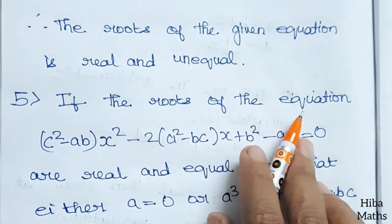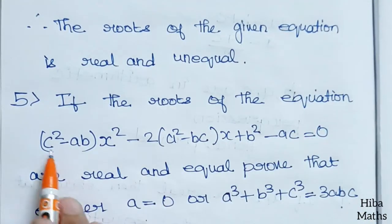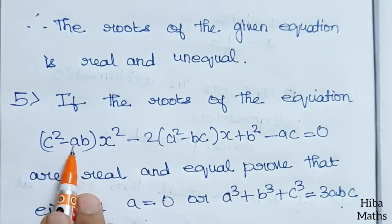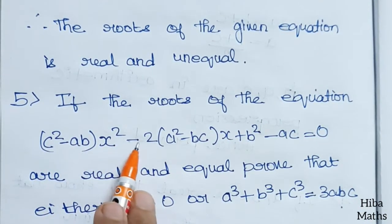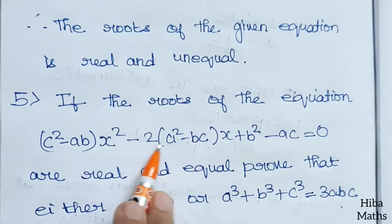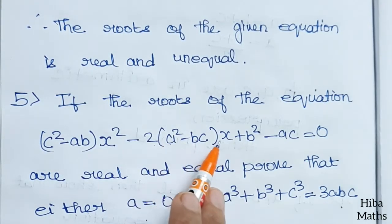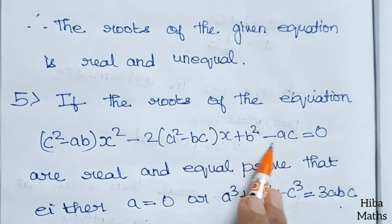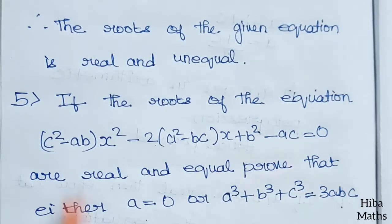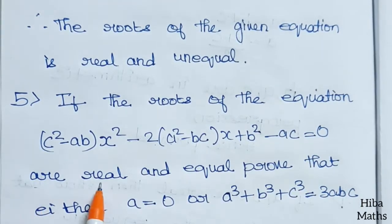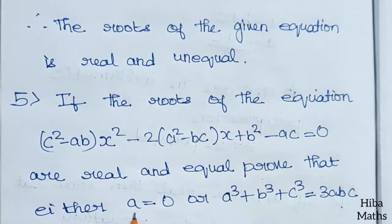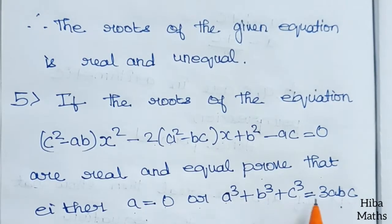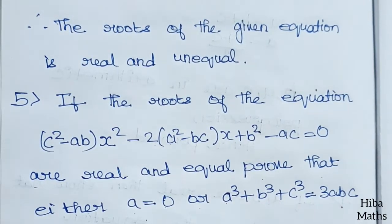If the roots of the equation (c² - ab)x² - 2(a² - bc)x + (b² - ac) = 0 are real and equal, prove that either a = 0 or a³ + b³ + c³ = 3abc.